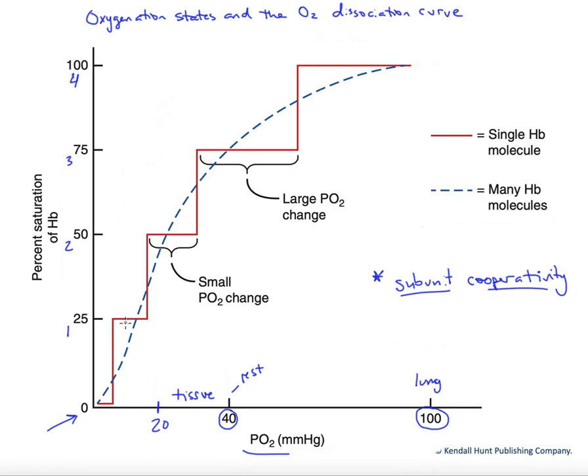And so once the first oxygen becomes bound, the other oxygens sort of jump on quickly. We end up with a sigmoidal-shaped curve in the blue line here if we average many molecules together undergoing this change. It's smoothed out because they don't all undergo these transitions at the exact same partial pressures of oxygen. But we see the stepwise differences for one, and then it gets smoothed out, and we get this sigmoid-shaped curve.